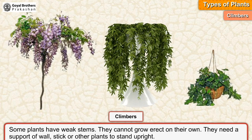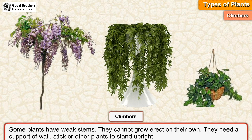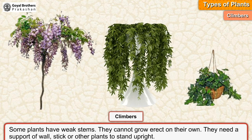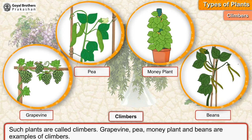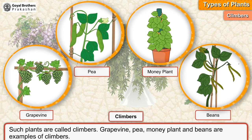Some plants have weak stems and cannot grow erect on their own. They need the support of a wall, stick, or other plants to stand upright. Such plants are called climbers. Grapevine, pea, money plant, and beans are examples of climbers.